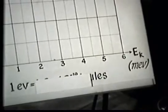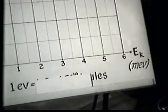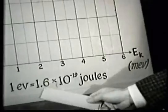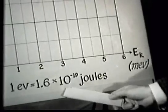One electron volt is the energy gained by an electron going through a potential difference of one volt, or 1.6 times 10 to the minus 19 joules.